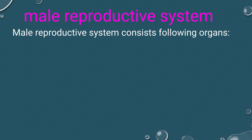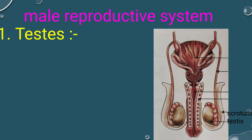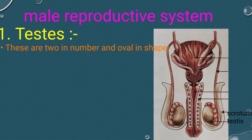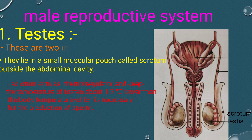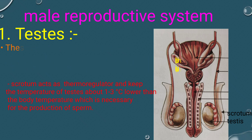The male reproductive system consists of the following organs. The testes are two in number and oval in shape. They lie in a small muscular pouch called the scrotum, outside the abdominal cavity. The scrotum acts as a thermoregulator and keeps the temperature of the testes about 1 to 3 degrees lower than the body temperature, which is necessary for the production of sperm.